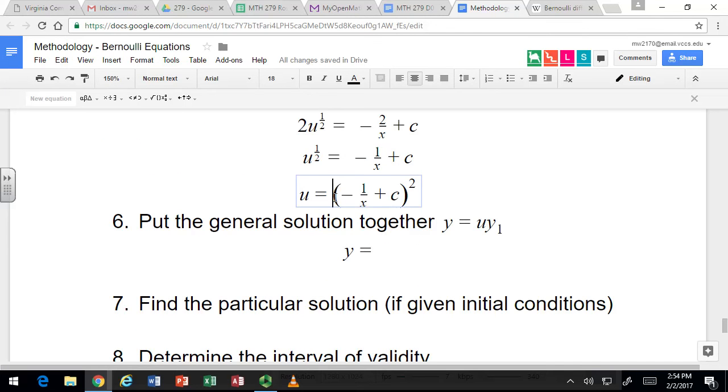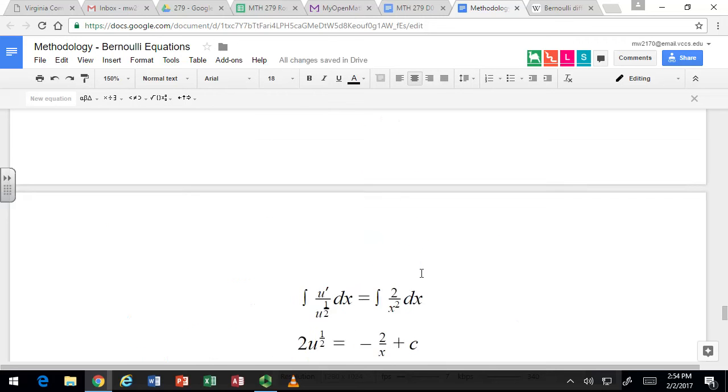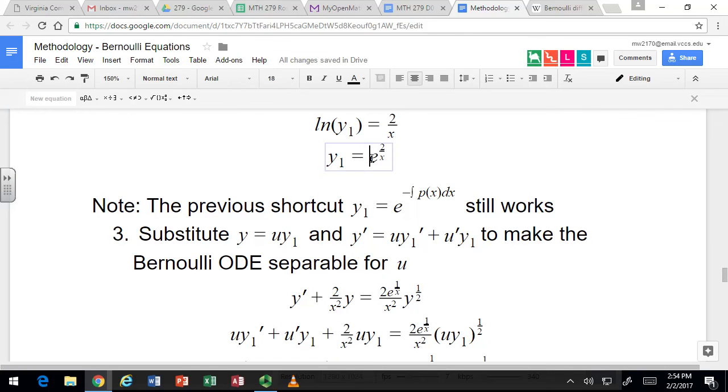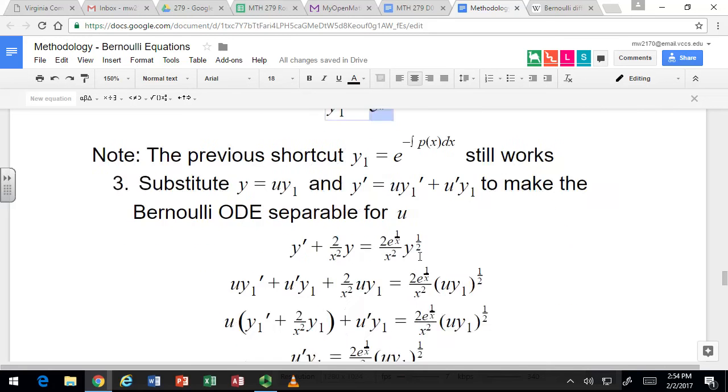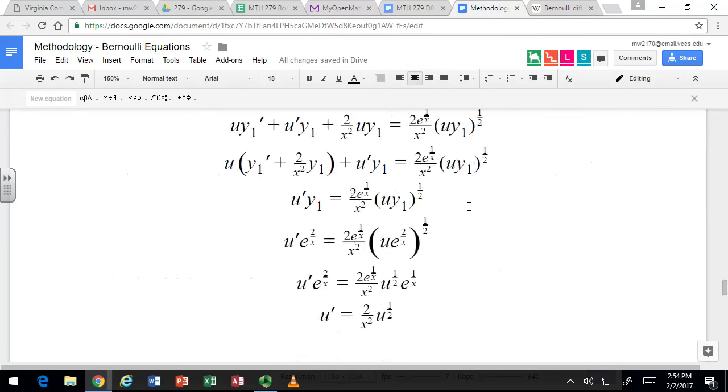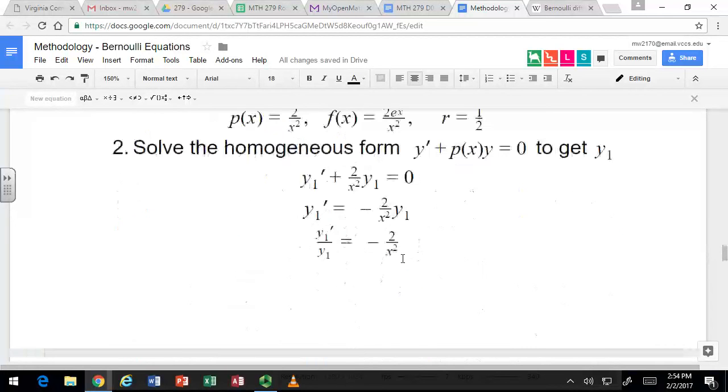All right, so we've got u, we've got y1. Do we have initial condition? I don't think we do. If we don't, we're done. If we do, we have to deal with it. And y1 was just e to the 2 over x. It goes here. There's not really any way to simplify these two. There's no initial condition, so we just leave it. You know how to find this c. If there's an initial condition, put in x, put in y, solve for c.